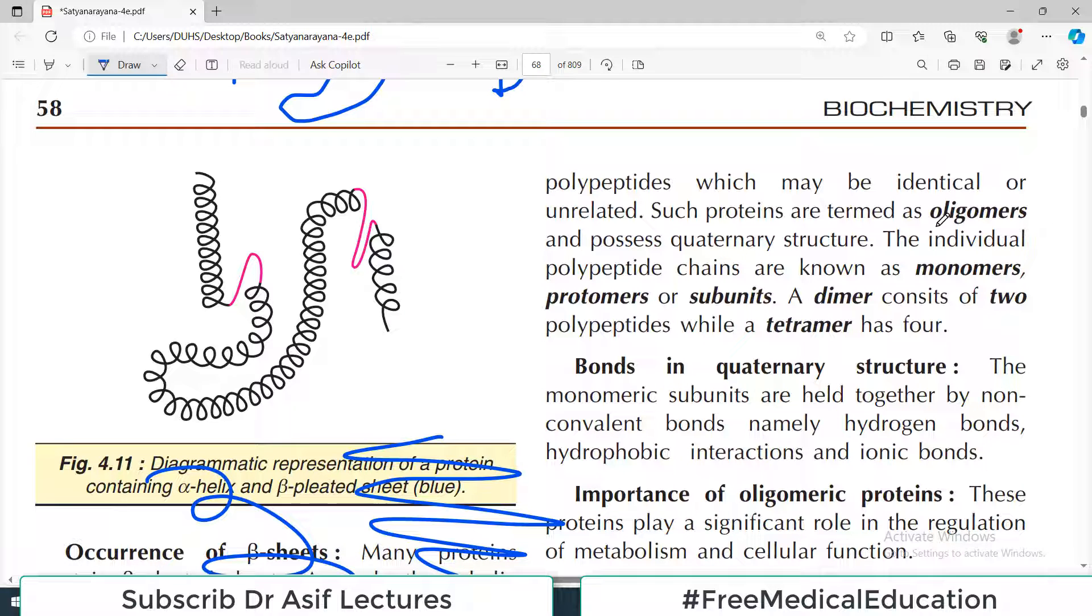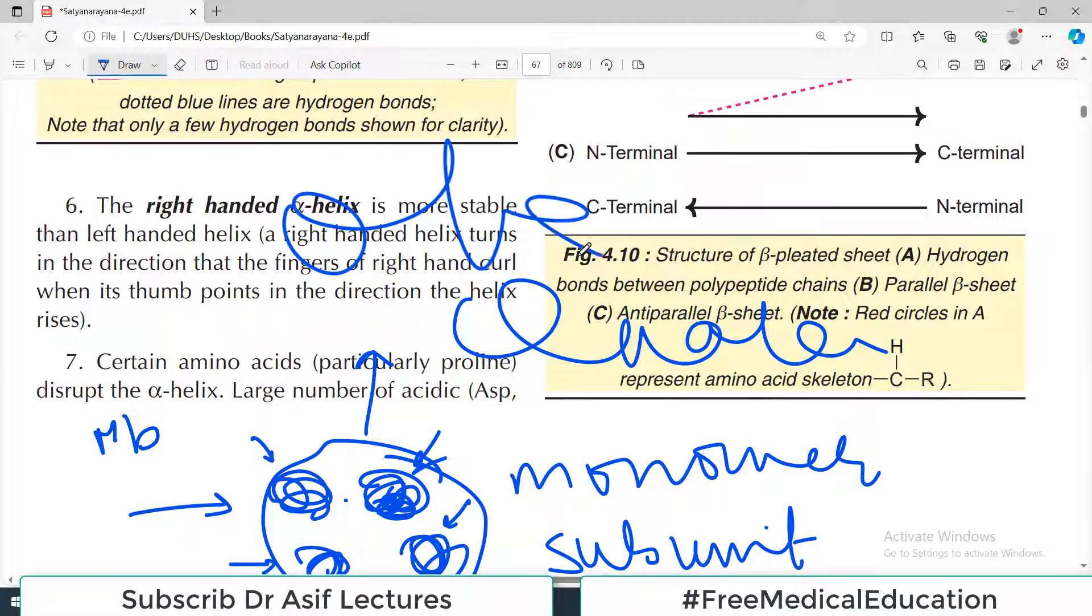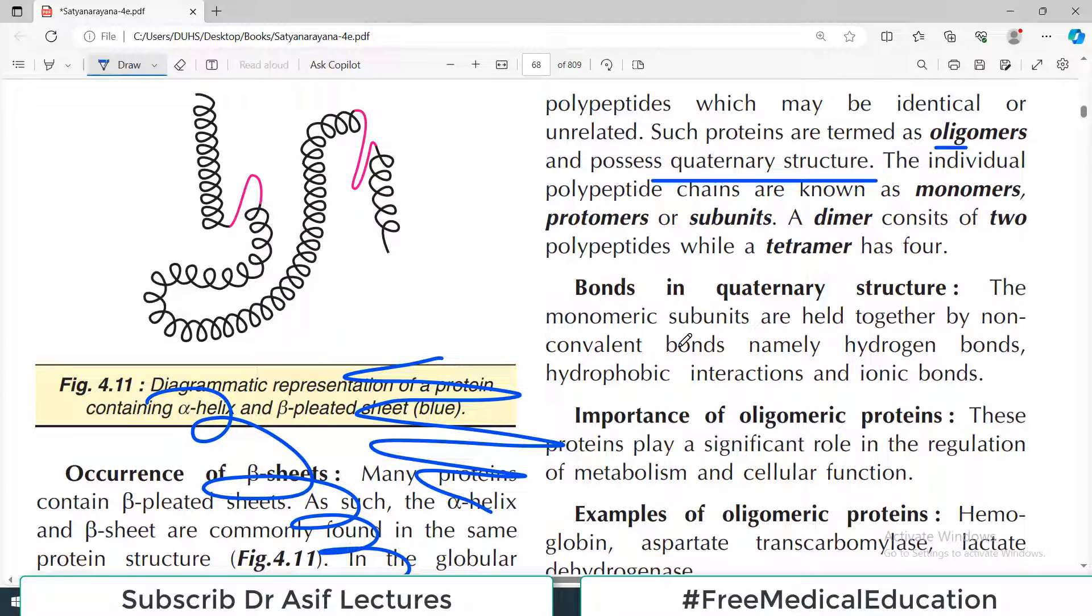Such proteins are known as oligomers and possess quaternary structure. Now this whole protein is called either quaternary structure, or the whole thing is named oligomer. And inside the oligomer, these single units are called monomers. So many monomers make an oligomer.